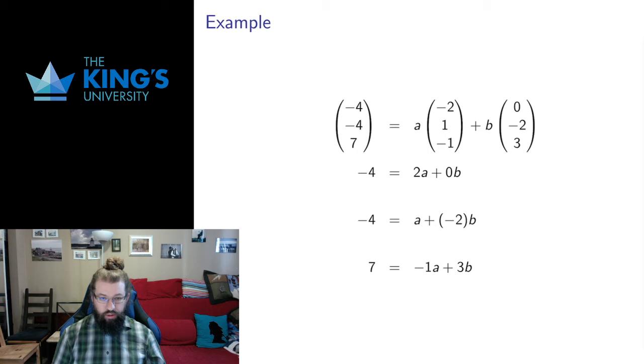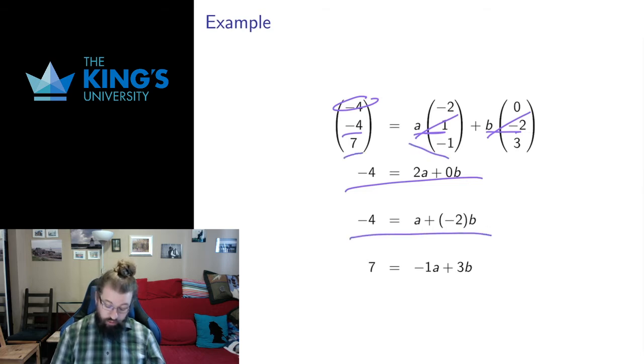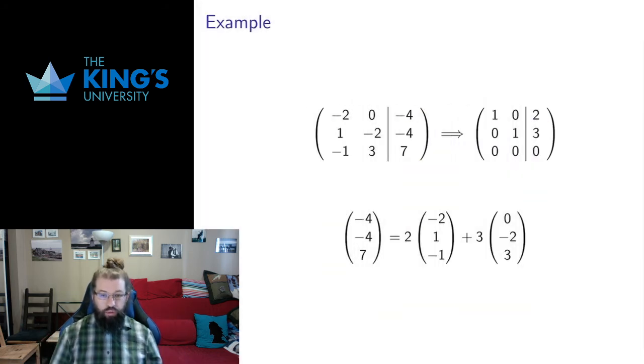But I can translate this into linear equations. -4 has to be a times -2 plus b times 0, there's your first component, gives you an equation. -4 has to be a times 1 and b times -2, your second component gives you an equation. And 7 has to be a times -1 and b times 3, your third component gives you an equation. So by looking at the components, we get equations. And now this is a system of linear equations. What do we do with those? We encode them as a matrix. What do we do with a matrix? We row reduce the matrix and try to solve.